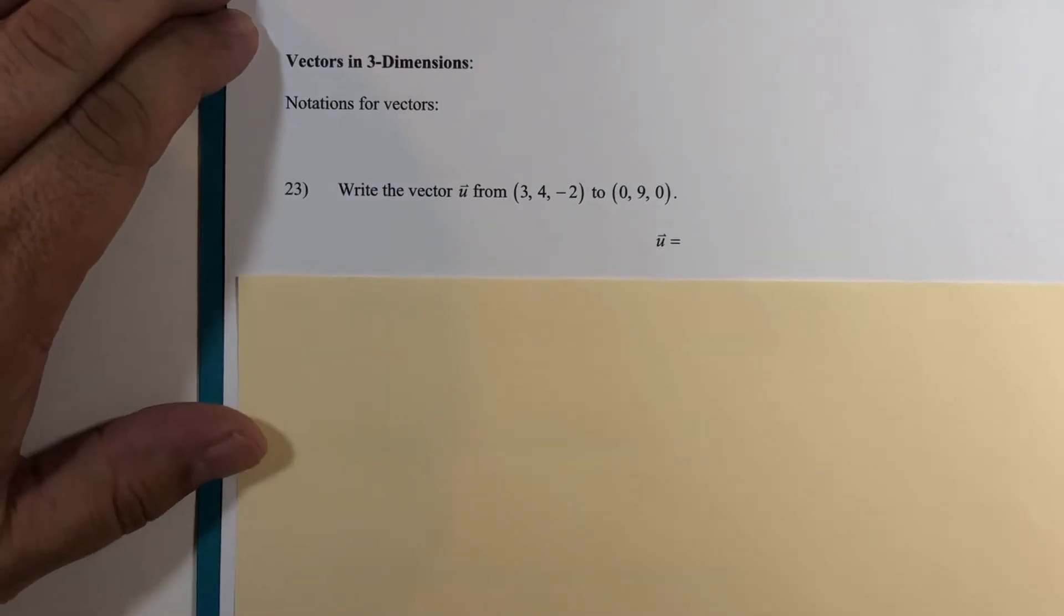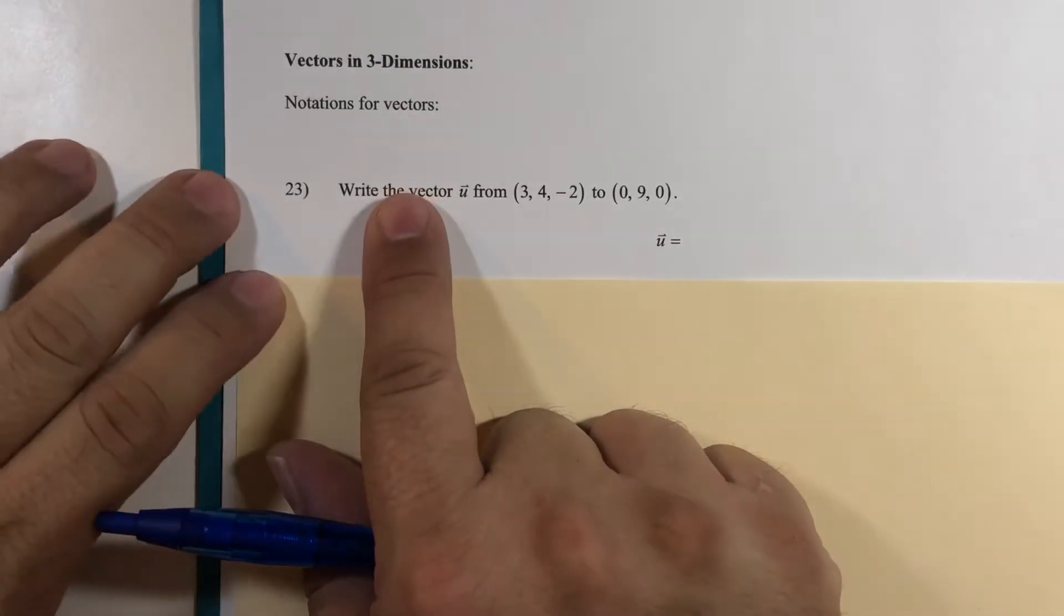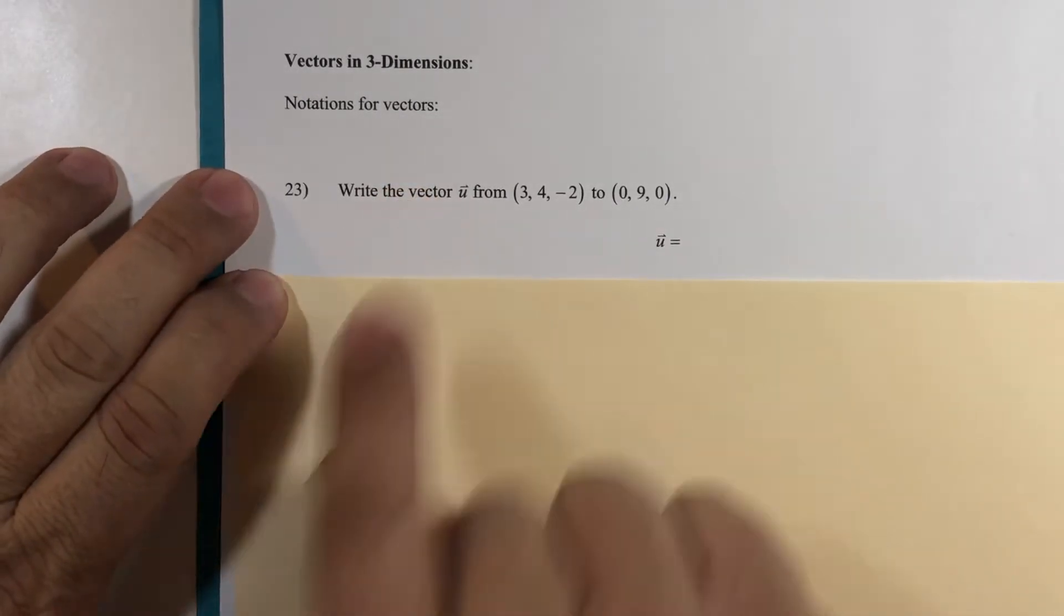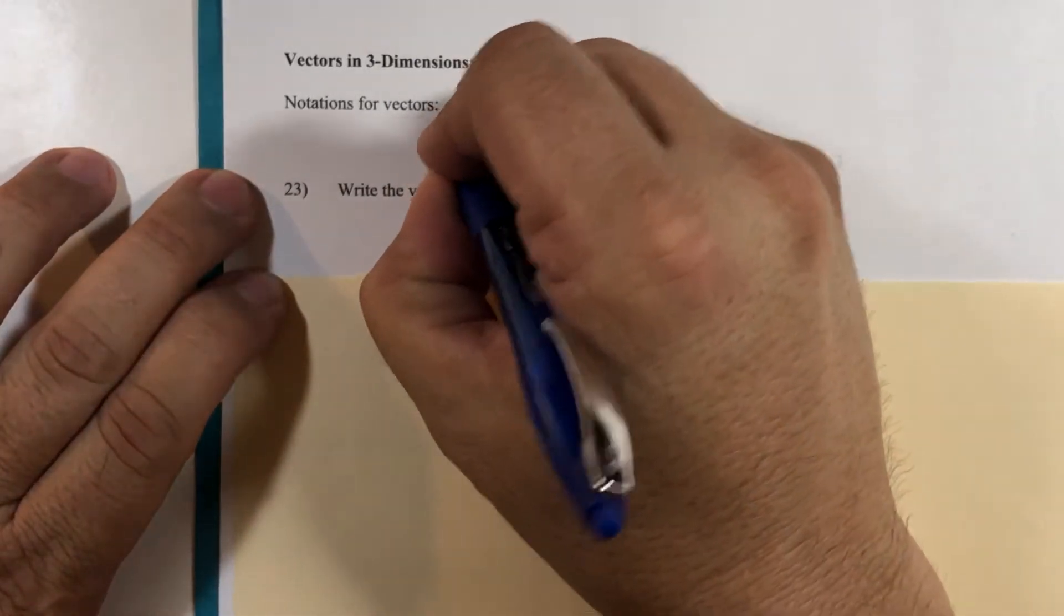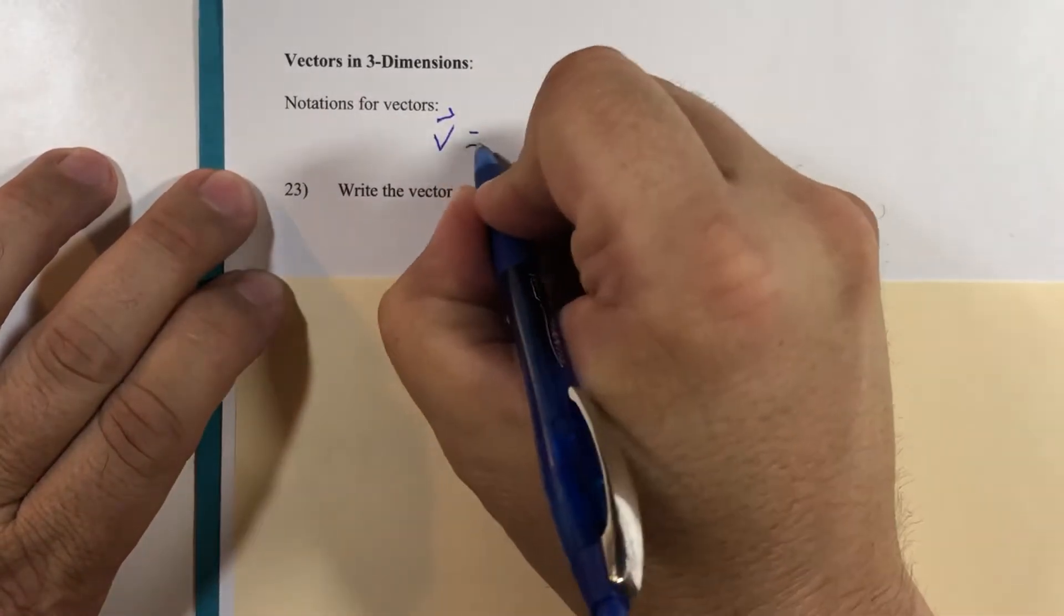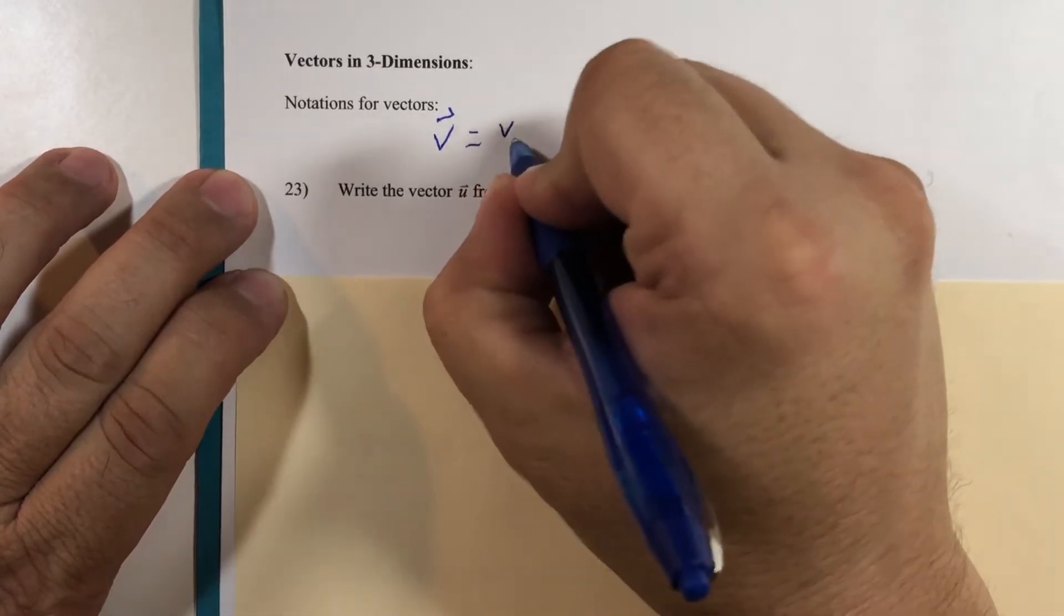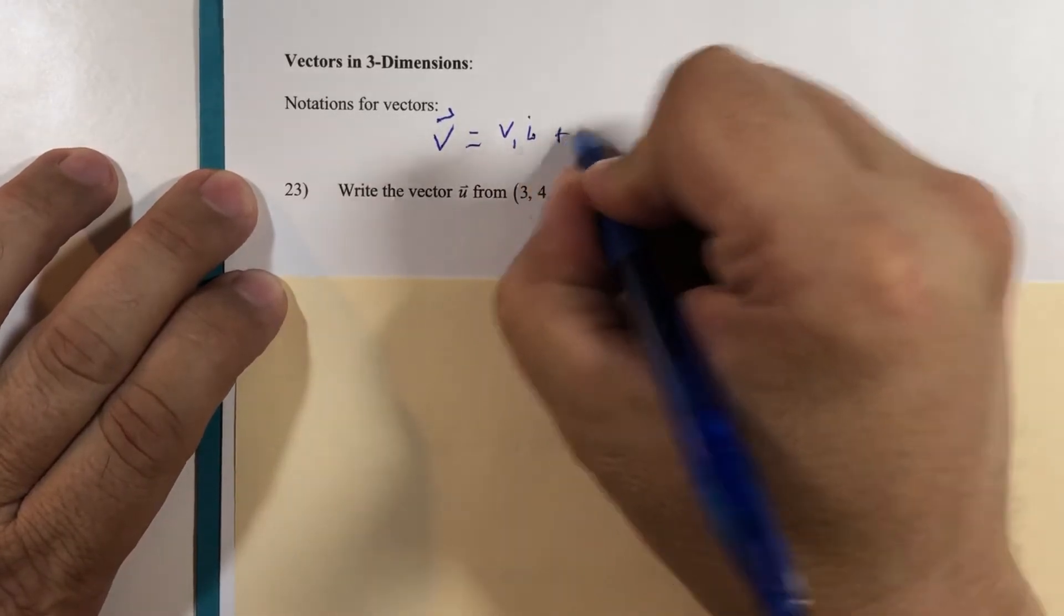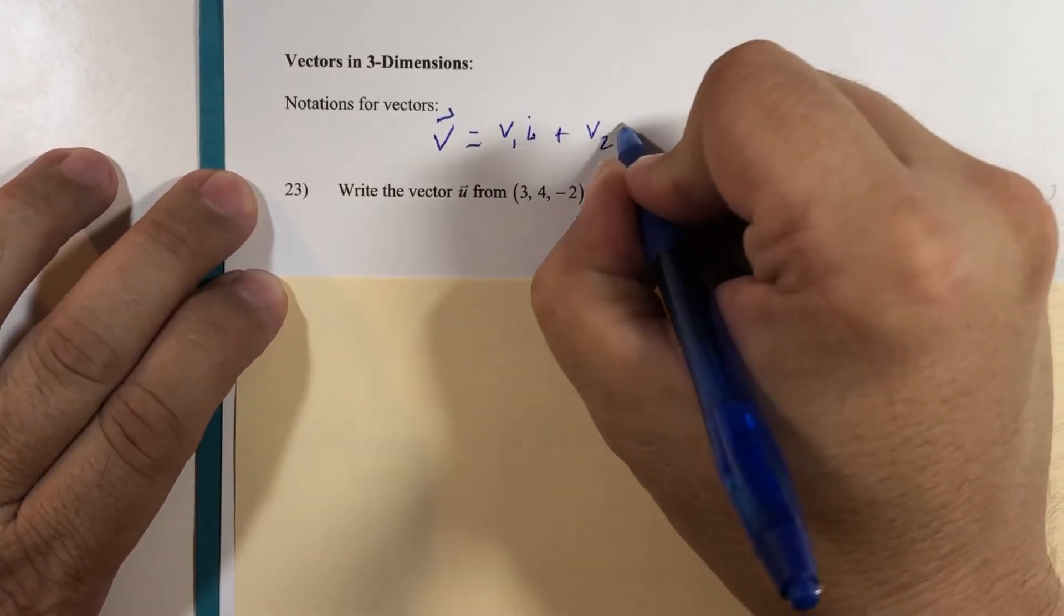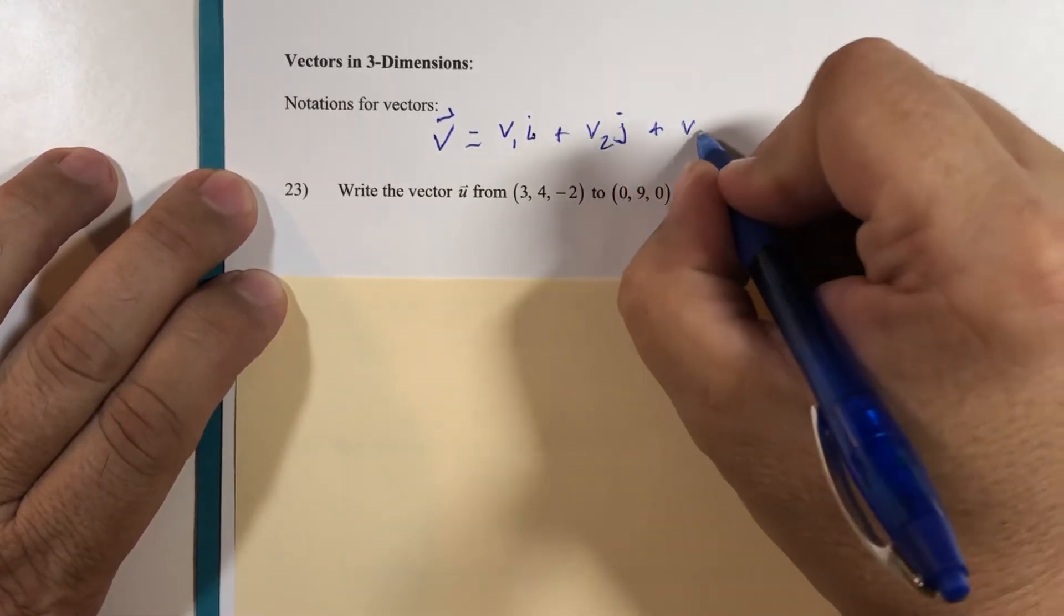Vectors in three dimensions. If we call the vector V, how clever is that, you can use the physics notation: some scalar times i and some scalar times j and some scalar times k.